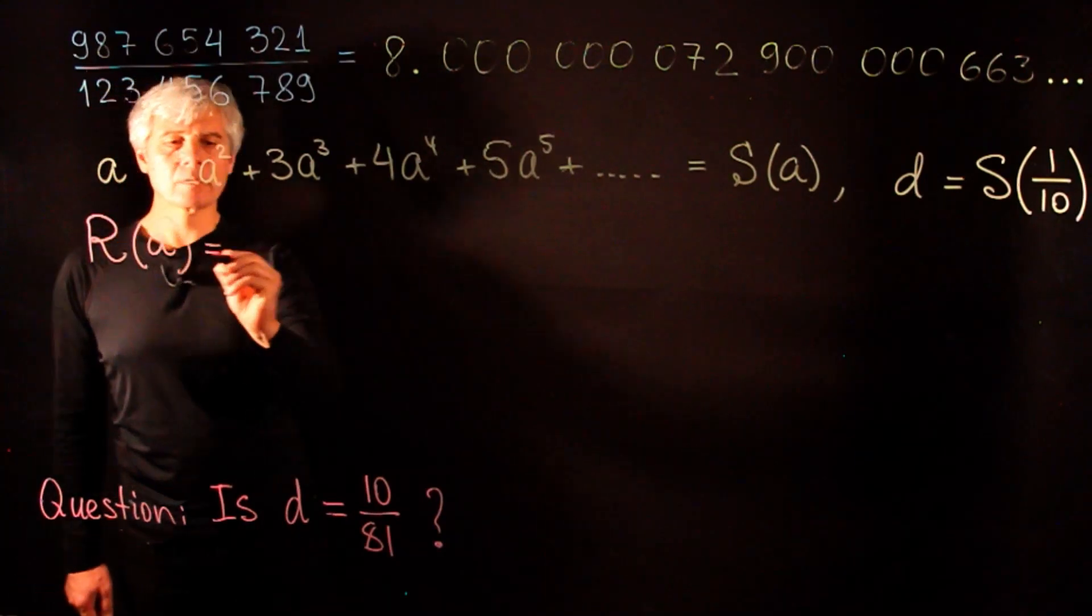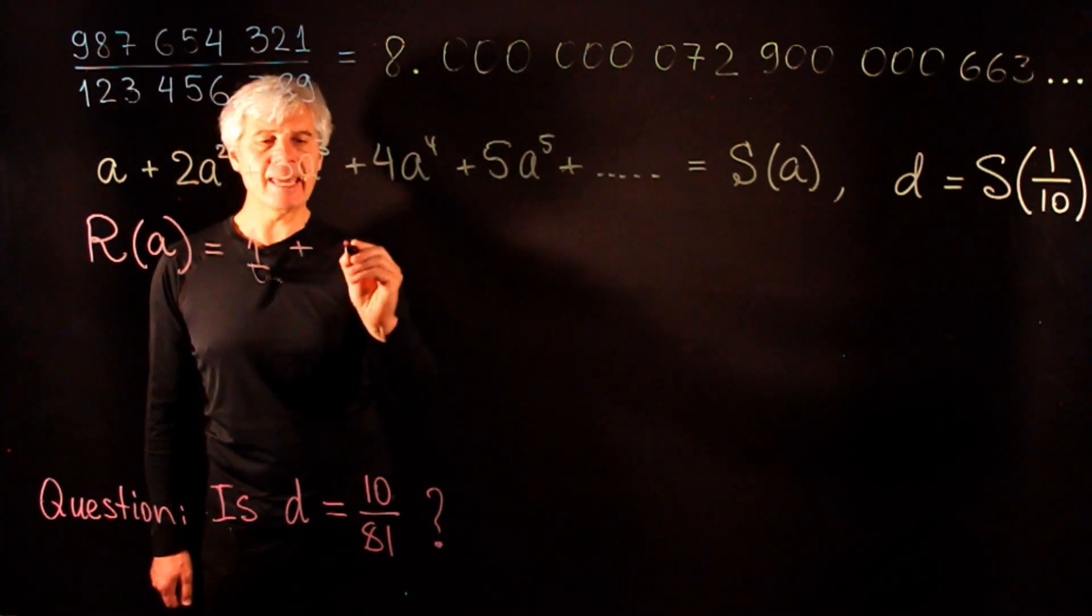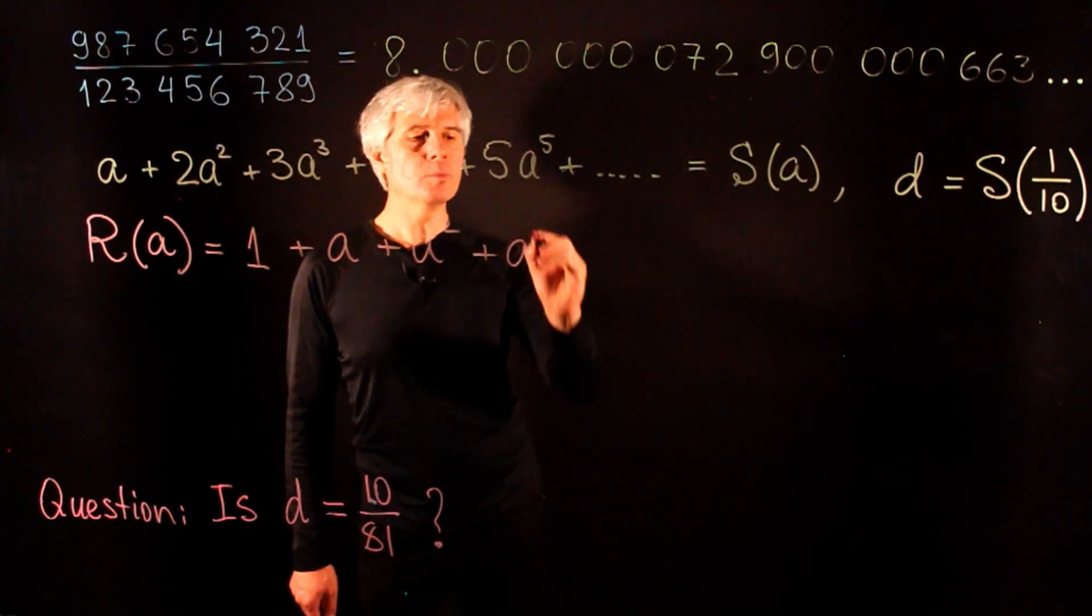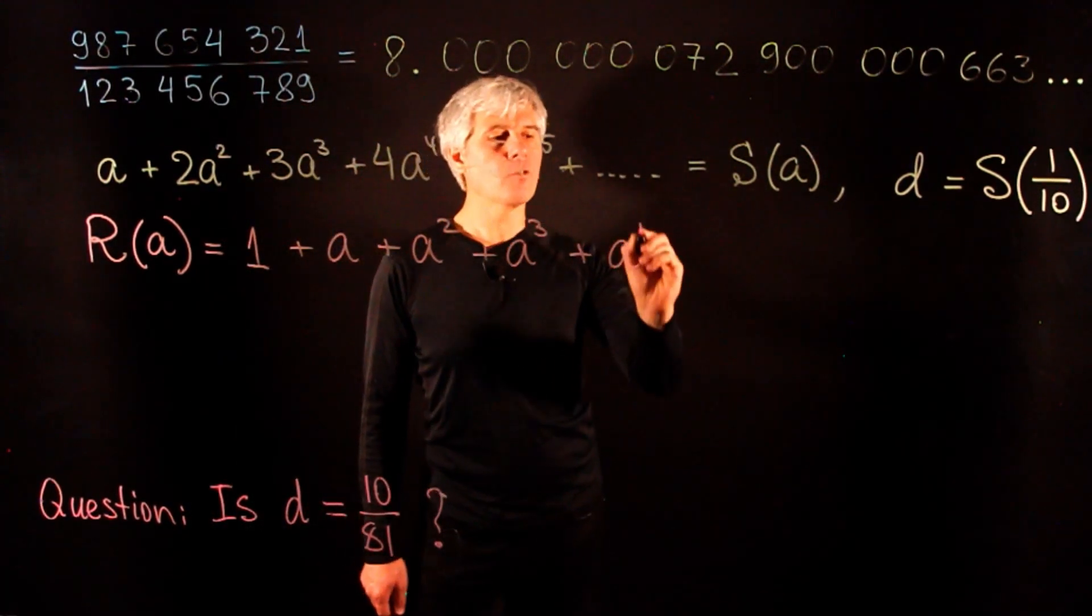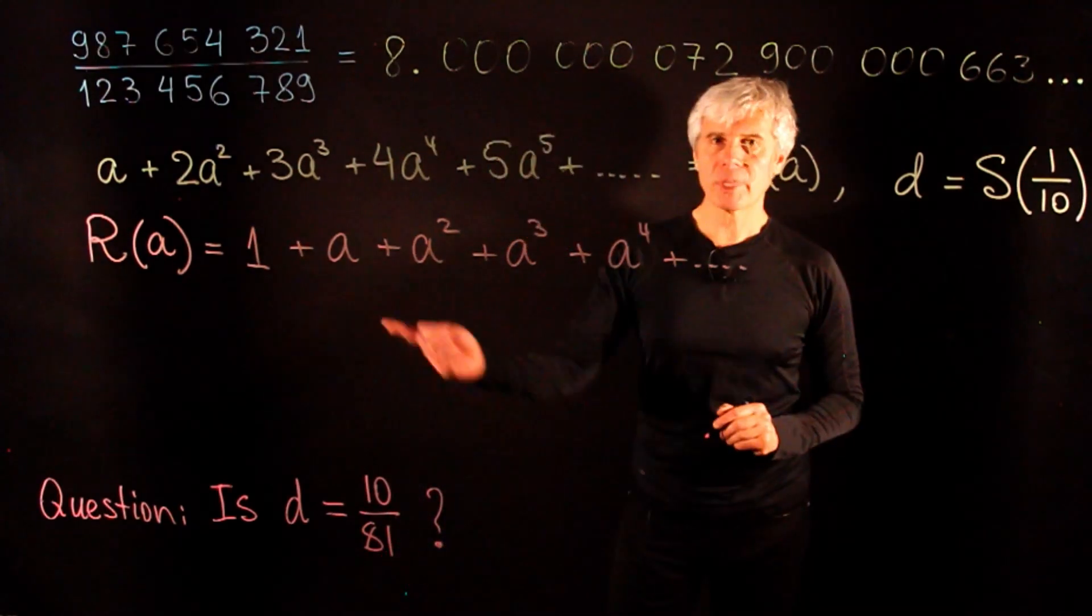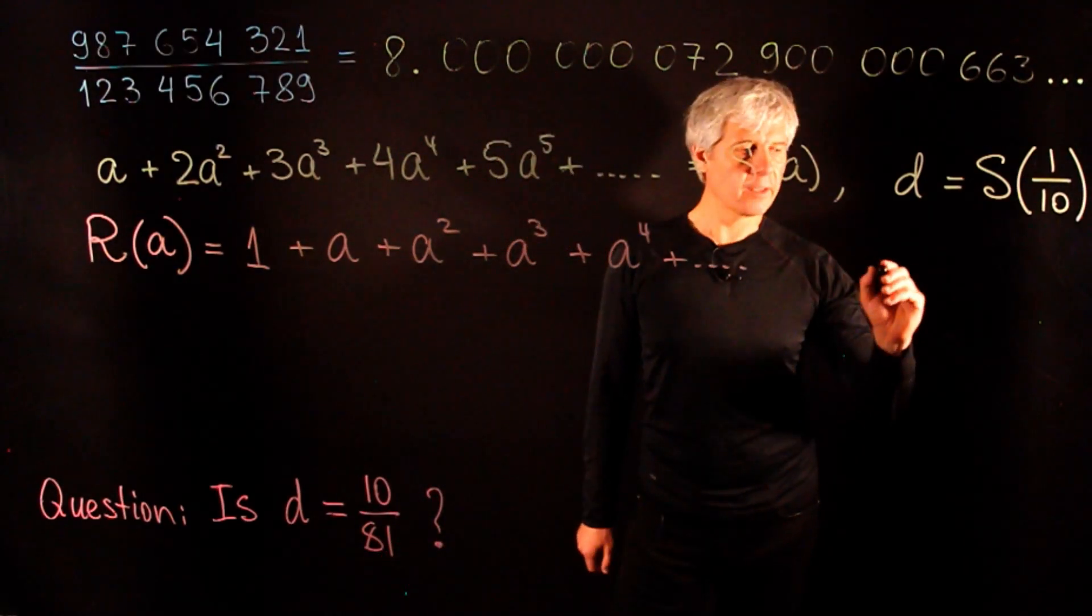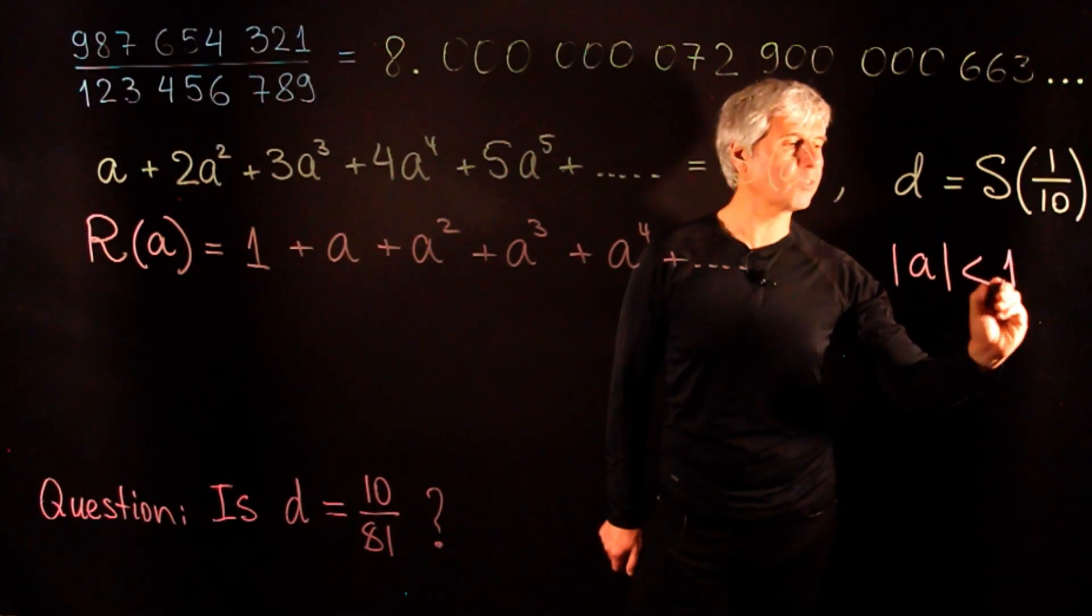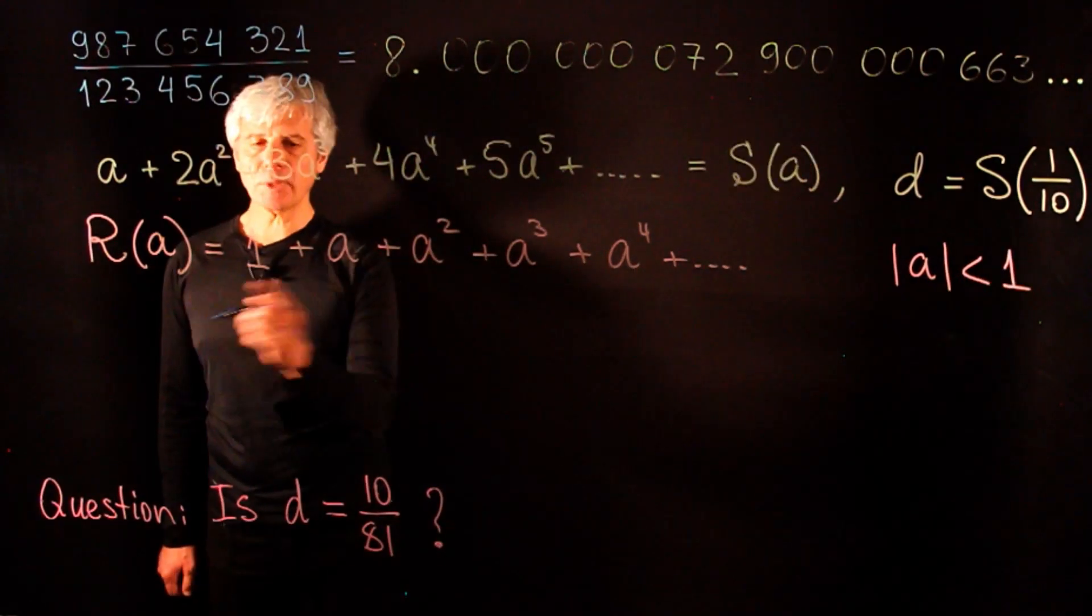Let us write down another infinite sum, which I'll call r of a. So I'll take 1 plus a plus a squared plus a cubed plus a to the power of 4 and all the way to infinity. For this sum to give a finite answer, the value of a should be small and a should have absolute value less than 1.